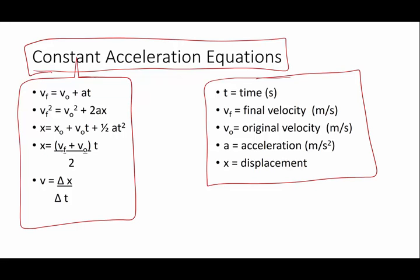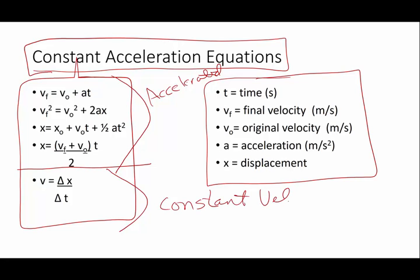Displacement equals original displacement plus original velocity times time plus one half acceleration and time, just that variable time, is squared. Displacement is going to be the average velocity. Final plus original divided by 2 is going to give us our average times time. And velocity is change in displacement over time.